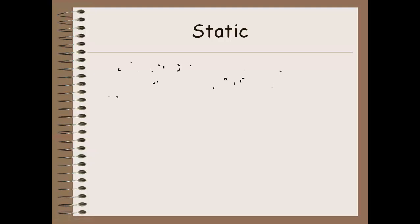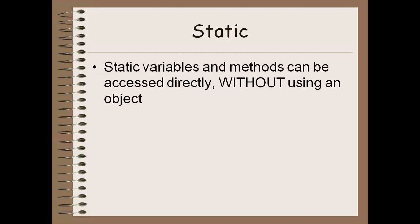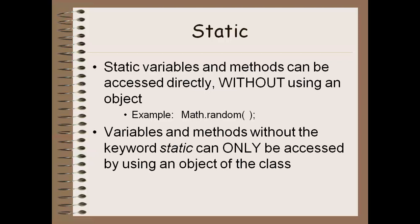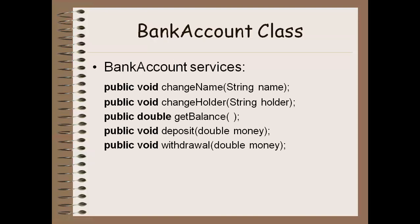Now, the static keyword — static variables and methods can be accessed directly without making an object. We've used this before with our math methods. If I want to get a random number, I don't have to make a Math object first — I can just say Math.random() and here's a random number. If methods don't have the keyword static, we can only use them if we have made an object of that class first. For example, with a String I had to make a String and then do stringBuffer.length(), or c.println() — I had to make a Console before I could print to it. None of our BankAccount methods are going to be static because I want you to have to make a BankAccount object before you can deposit or withdraw from it.